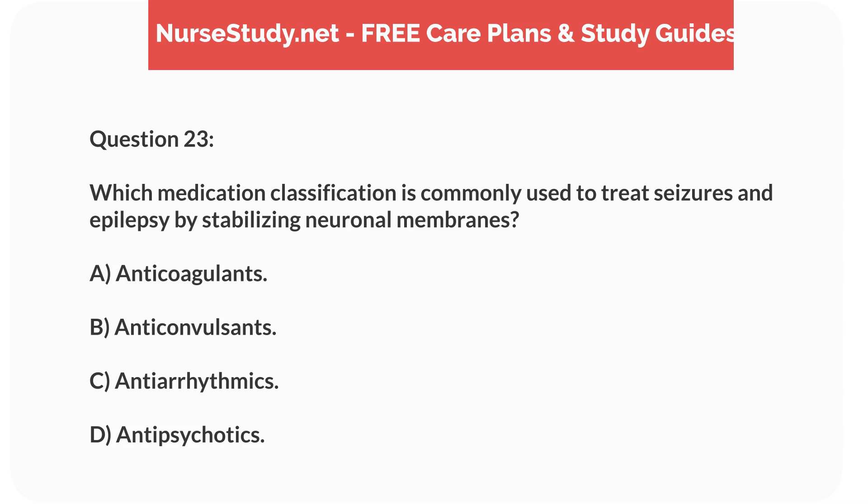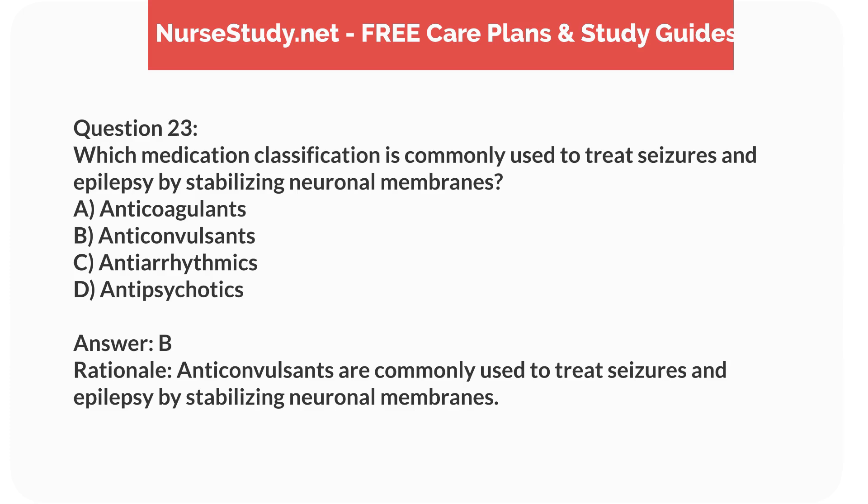Question 23. Which medication classification is commonly used to treat seizures and epilepsy by stabilizing neuronal membranes? A. Anticoagulants. B. Anticonvulsants. C. Antiarrhythmics. D. Antipsychotics. Answer: B. Rationale: Anticonvulsants are commonly used to treat seizures and epilepsy by stabilizing neuronal membranes.